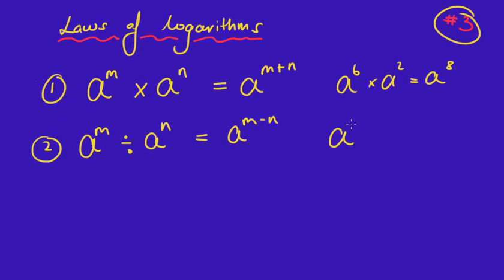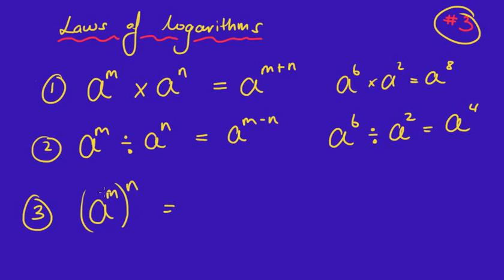So for example, a^6 divided by a^2 would end up being 6 take away 2 is 4. And the very last law I want to look at, which is the third rule that we looked at with indices, is one inside the bracket, one outside the bracket, and then we actually multiply. For example, a^6 to the power of 2, 6 times 2 is 12, so a to the power of 12.